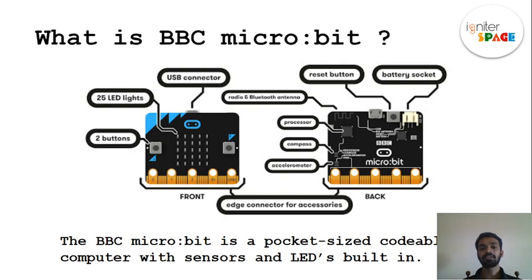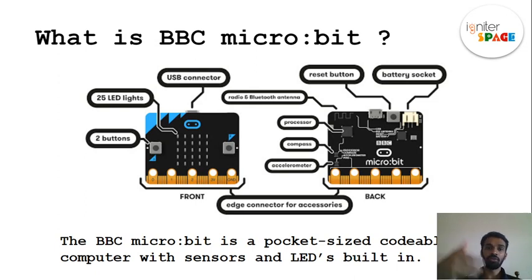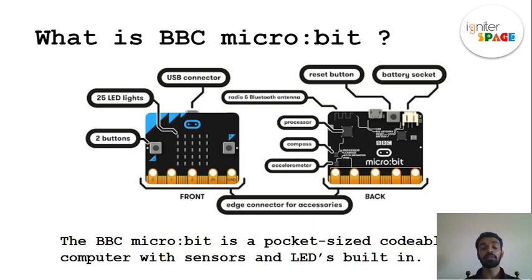On the back of the Micro:bit board, we have an accelerometer, which detects changes in movement. For example, when you tilt your phone, your screen rotates — the accelerometer is responsible for that. We also have a compass, and a processor, which is the brain of the Micro:bit.